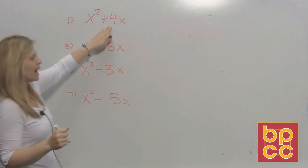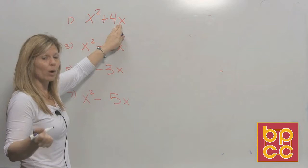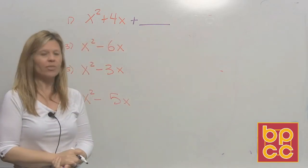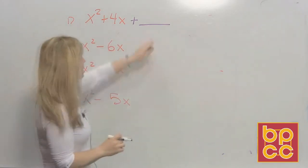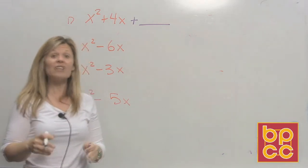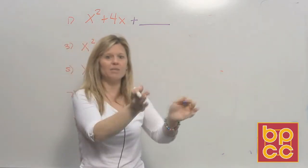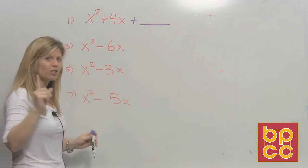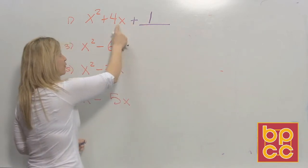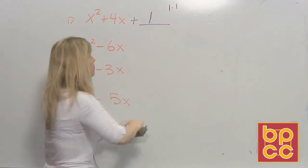Starting with example 1, I have the binomial x squared plus 4x. I want to make it a trinomial by adding a missing number — that's what completing the square is. This can't be just any number; the number has to make the new trinomial factor to be identical — a perfect square, something times itself. Could the number be 1? No, because 1 times 1 is 1, and that does not add to 4. Is it 2? What multiplies to 2? 1 and 2 — but 1 and 2 only add to 3, so that doesn't work.